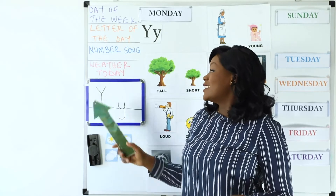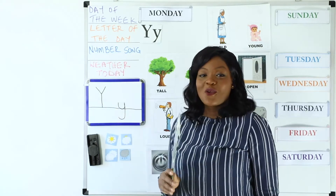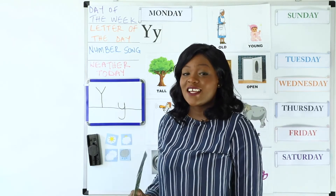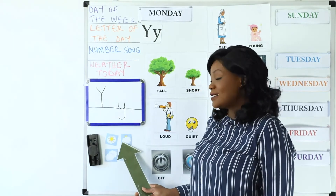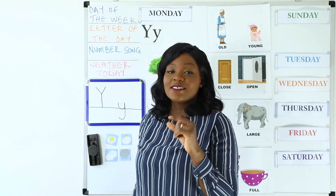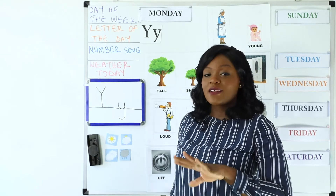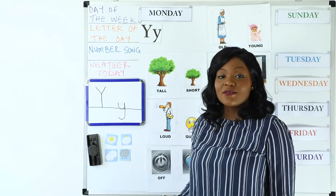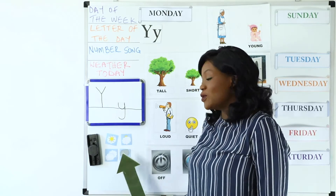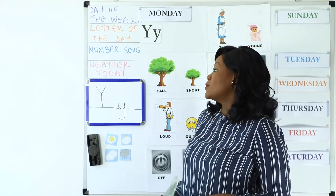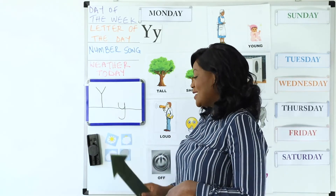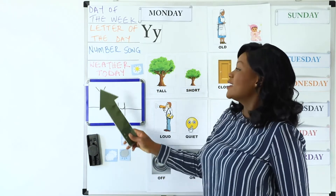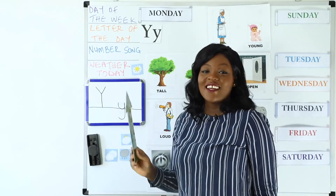So let's talk about the weather today. What's the weather like where you live? Is it sunny with lots of sunshine and hardly any clouds? Is it partly sunny? Is it cloudy where you can't see the sun? Or is it cloudy and wet? The weather today where I am is sunny. Let's put that over here — the weather today is sunny. Good job everyone.